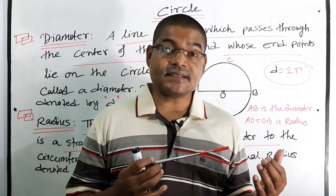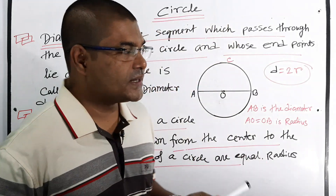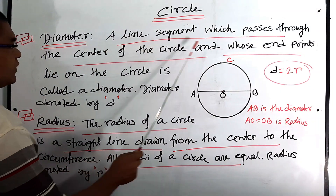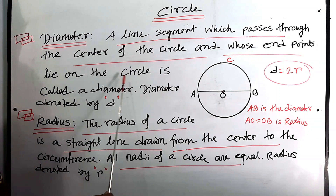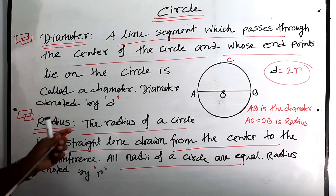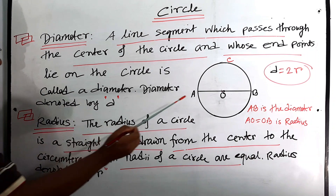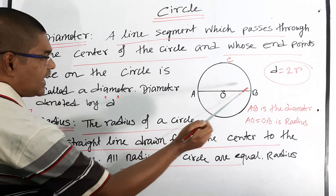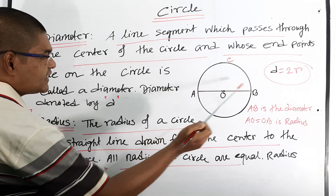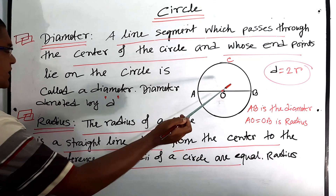Now we will have to know the definition of diameter of a circle. A line segment which passes through the center of the circle and whose end points lie on the circle is called a diameter, and it is denoted by d. Here AB is a line segment which passes through the center O, and A and B are the end points lying on the circle.